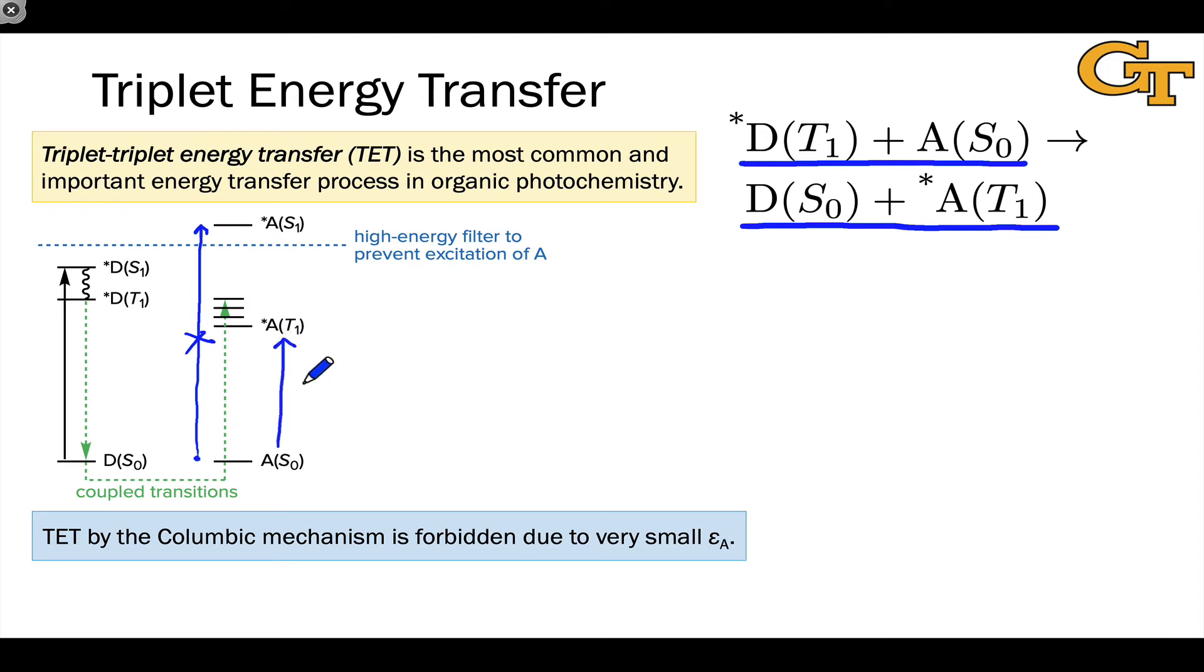And so here we're talking about the absorption coefficient for this transition, absorption of a photon by the singlet ground state to form the T1 state. This is spin forbidden, and so it's associated with very small epsilon value. And this leads to a very slow, in fact, prohibitively slow energy transfer via FRET or the Coulombic mechanism.